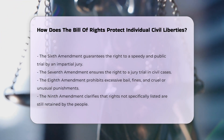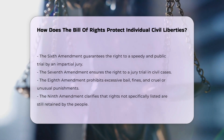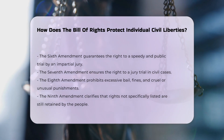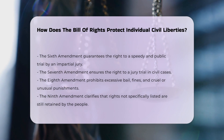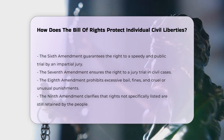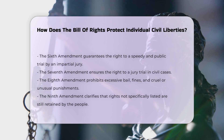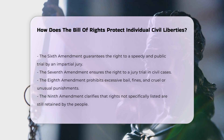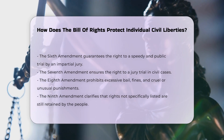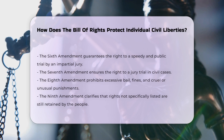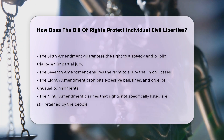Additional Protections: The Ninth Amendment states that the enumeration of certain rights in the Constitution does not deny or disparage other rights retained by the people, such as the right to travel, vote, marry, and make decisions about one's own body. The Tenth Amendment reserves any powers not delegated to the federal government to the states or the people.